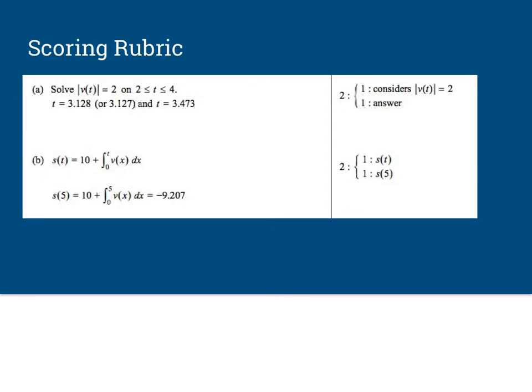Now I think you're going to find this very similar to the previous one. So on part A here, of course you're going to have to take the absolute value of velocity and when that is equal to 2. So notice you get one point for considering that. Make sure, make sure, make sure you show your process, what you're looking at in your calculator. And then you get one point for the answer.